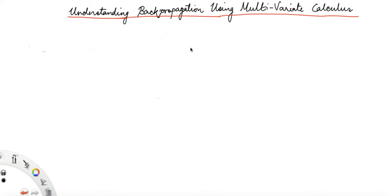Let's understand back propagation using multivariate calculus. Back propagation is one of the difficult concepts in machine learning in general and deep learning in particular. So let's understand it.